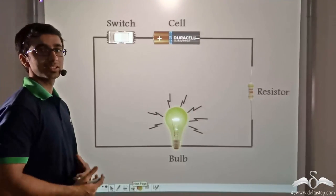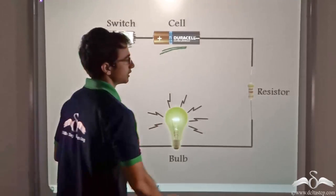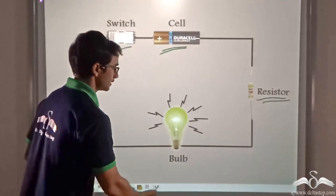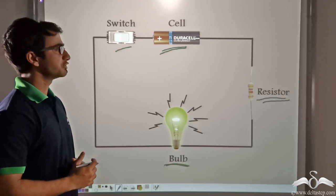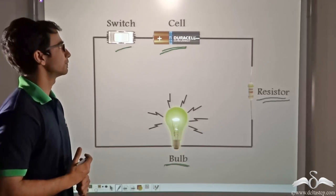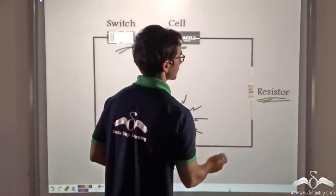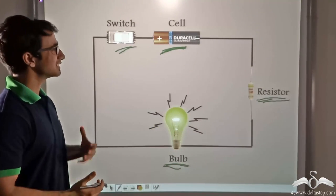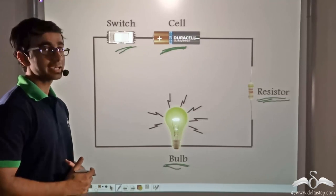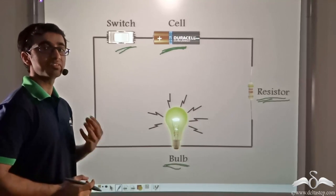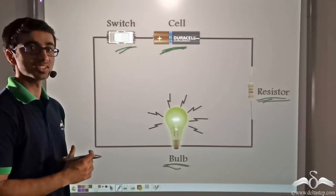If we consider a simple circuit like we saw in the simulation, we have a switch, a cell or battery providing the current, a resistor hindering the flow of current, and a bulb. Drawing this circuit in detail — the cell, switch, bulb, and resistor — would be quite tedious. So this is not how we draw a circuit. Drawing a circuit is simple due to certain symbols and conventions used for the elements.